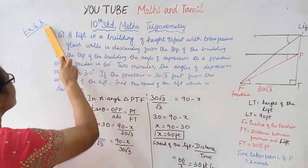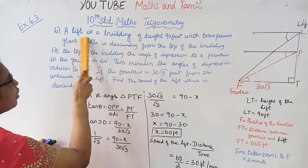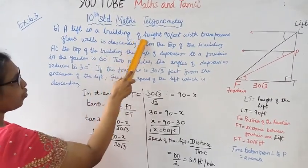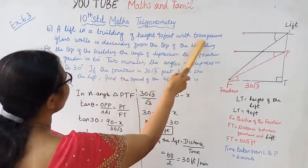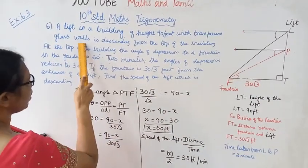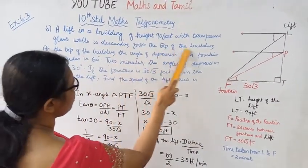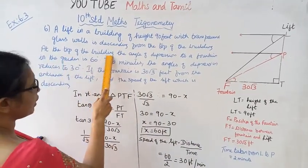10th Standard Maths Trigonometry, Exercise 6.3, Question 6. A lift in a building of height 90 feet with transparent glass walls is descending from the top of the building. At the top of the building,